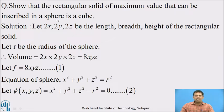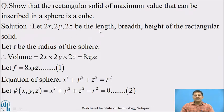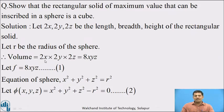Here we have to show that the rectangular solid of maximum volume that can be inscribed in a sphere is a cube. The given function is a rectangular solid with width, height and length. Let us assume that 2x, 2y, 2z be the length, breadth and height of the rectangular solid. The volume is given by the product of the length, breadth and height, which equals 8xyz. We will denote this function by F, that is equal to 8xyz. Call it equation number 1.